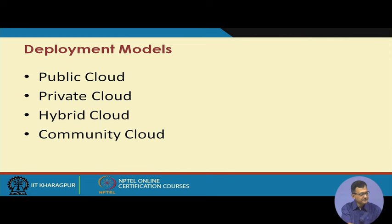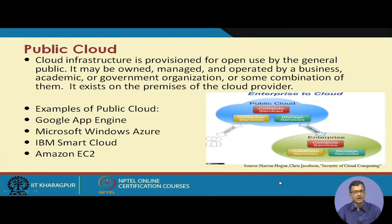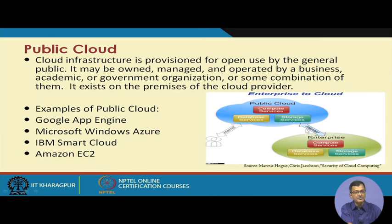In the case of a public cloud, as the name suggests, it is available for the public at large — anyone can purchase it and it is somewhat omnipresent across the internet. Some very popular examples are Google App Engine, Microsoft Azure, IBM Cloud, Amazon EC2, and many others. Enterprises or individuals can subscribe to this public cloud over the internet and have its services.